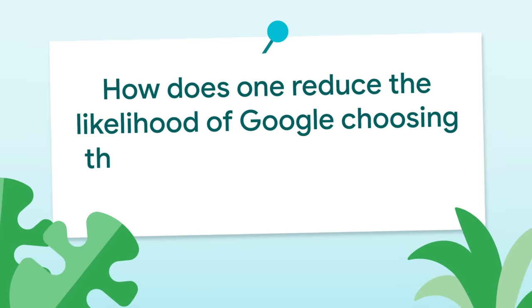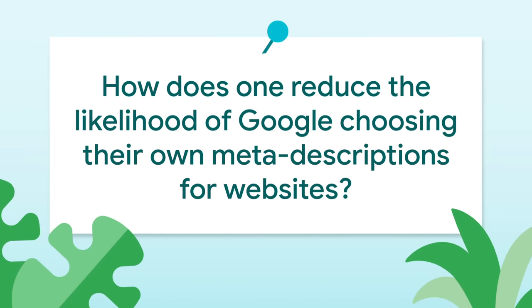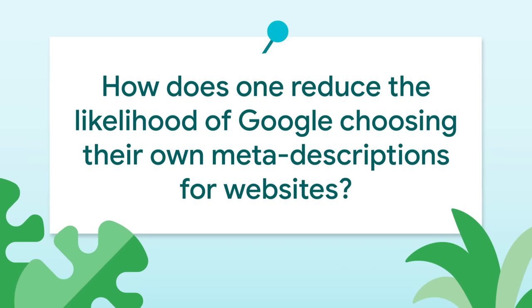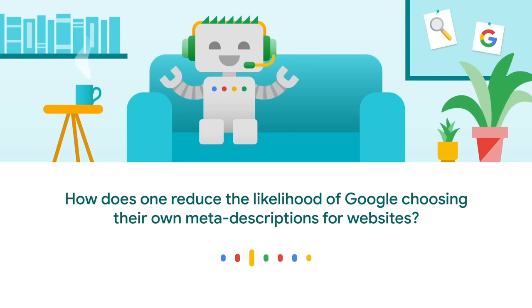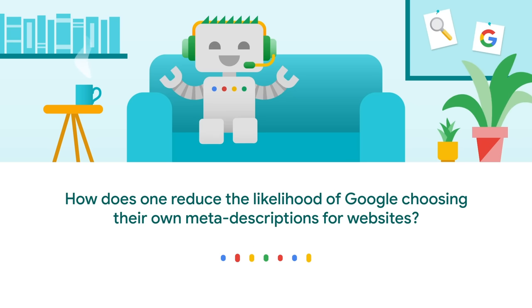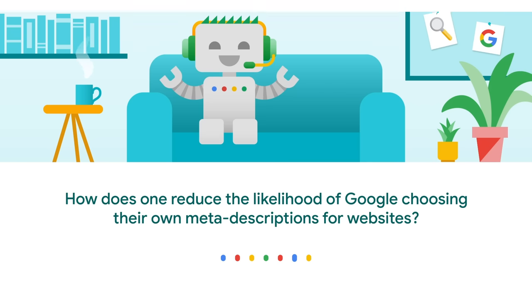Sam Bowers is asking: how does one reduce the likelihood of Google choosing their own meta descriptions for a website? Not always, but usually our algorithms will use your meta description when there's not much content on the page itself, or when the meta description is more relevant to a user's query than the actual content of the page.